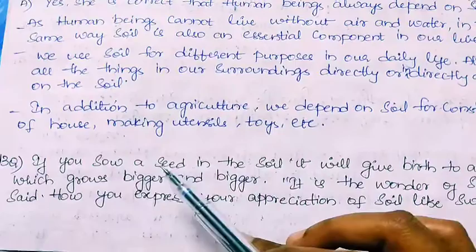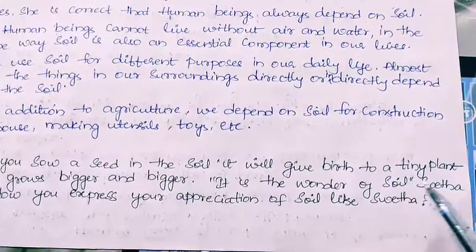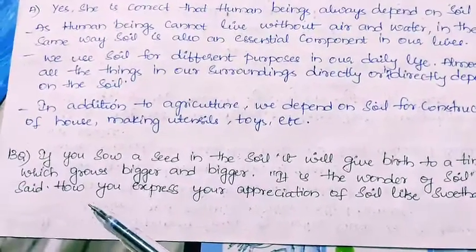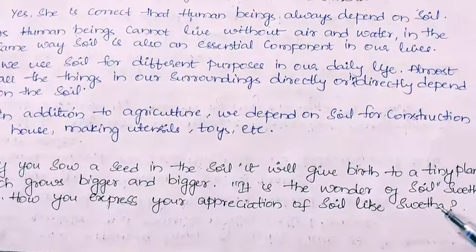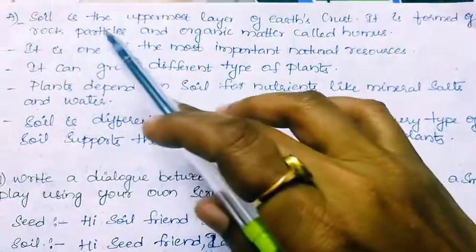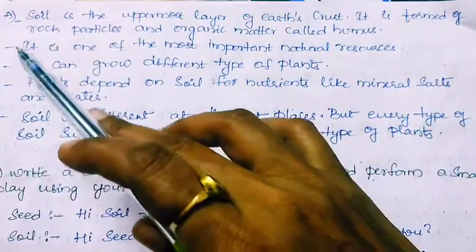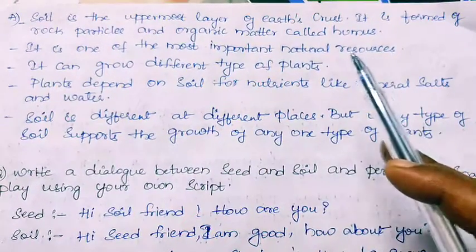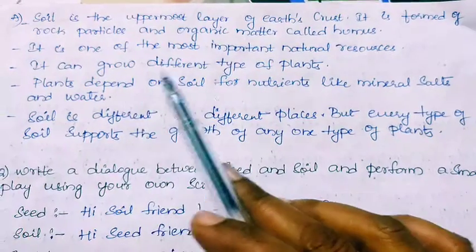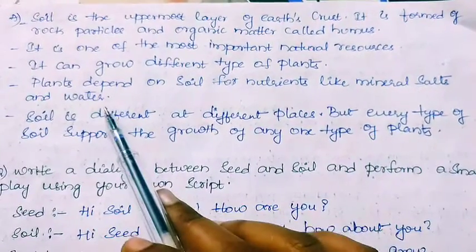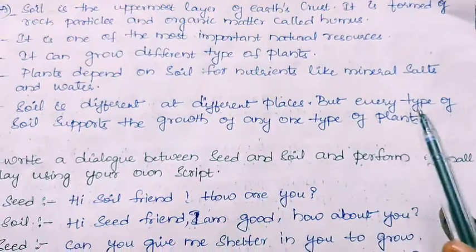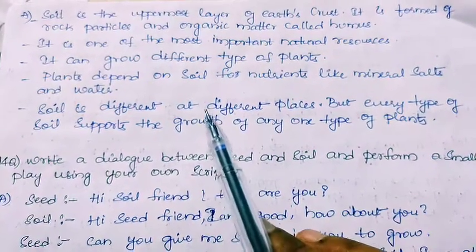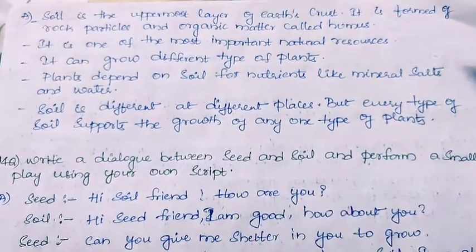Thirteenth question: Shweta said planting a seed in soil which grows into a bigger plant is the wonder of soil. How do you express your appreciation of soil like Shweta? Soil is the uppermost layer of earth's crust, formed of rock particles and organic matter called humus. It is one of the most important natural resources. Plants depend on soil for nutrients like mineral salts and water. Soil is different at different places, but every type of soil supports the growth of some type of plant, so soil is truly a precious resource.